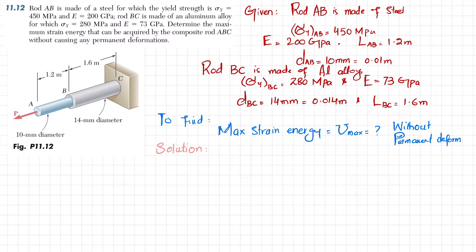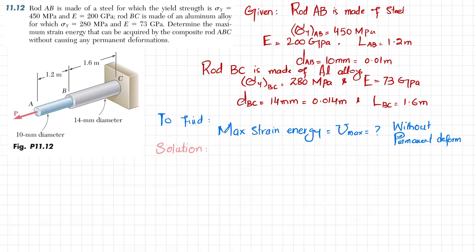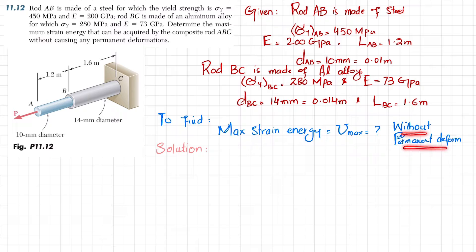All the data have been mentioned: rod AB has yield strength and modulus of elasticity, with a length of 1.2 meters. Rod BC is made up of aluminum alloy having yield strength 280 MPa, E of 73 GPa, a length of 1.6 meters, and a diameter of 14 millimeters. We need to find the maximum strain energy without permanent deformation.